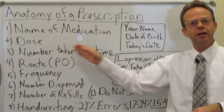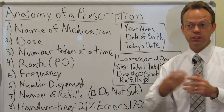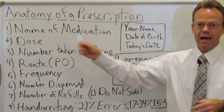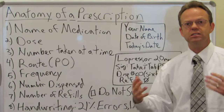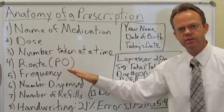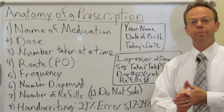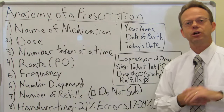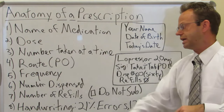Next up is the number taken at a time. It's a 20 milligram tab — do you take one tab or two tabs? How many tabs do you take? That needs to be specified. Next is the route — how are you supposed to take this? The vast majority of the time you take it by mouth; the abbreviation is PO for per oral. But if you're using a cream, you're not going to eat the cream, so you have to specify how the medication is supposed to be taken.